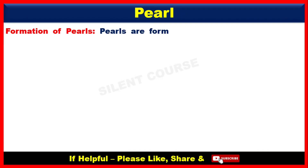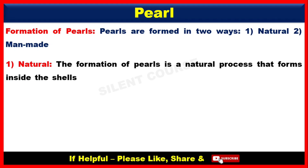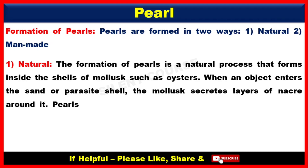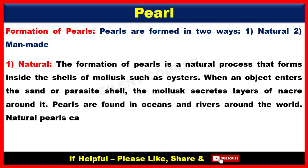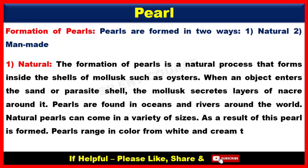Formation of Pearls. Pearls are formed in two ways: natural and man-made. Number 1, Natural. The formation of pearls is a natural process that forms inside the cells of mollusks, such as oysters. When an object enters the sand or parasite cell, the mollusk secret layer of nickel around it. Pearls are formed in oceans and rivers around the world. Natural pearls can come in a variety of sizes. As a result, a pearl is formed. Pearls range in color from white and cream to pink, yellow, and even black.